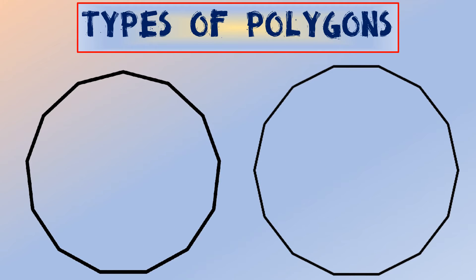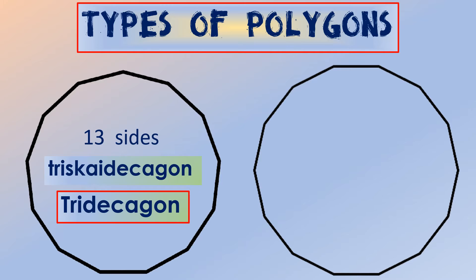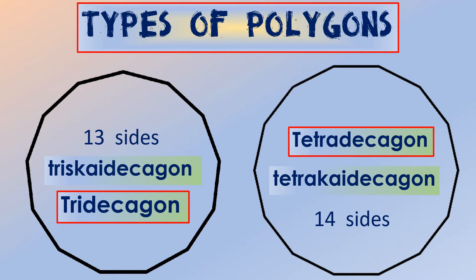A polygon with thirteen sides is called a triskaidecagon, also called a tridecagon. A closed figure with fourteen sides is called a tetrakaidecagon, or a tetradecagon.